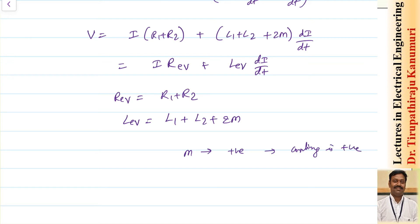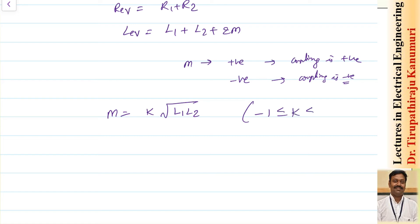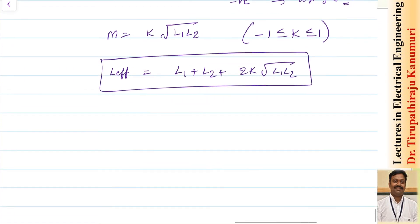M is taken as negative if the coupling is negative. Recall from the last class that M = k·√(L1·L2), where k is the coefficient of coupling ranging from −1 to +1 (ideally ±1, but practically less due to leakage flux). So the effective inductance is L = L1 + L2 + 2k·√(L1·L2).